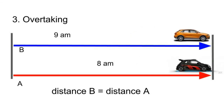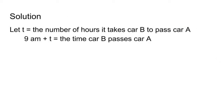In this case, the distance traveled by car B is equal to the distance traveled by car A. Let t equal the number of hours it takes car B to pass car A. 9 a.m. plus t is equal to the time car B passes car A.